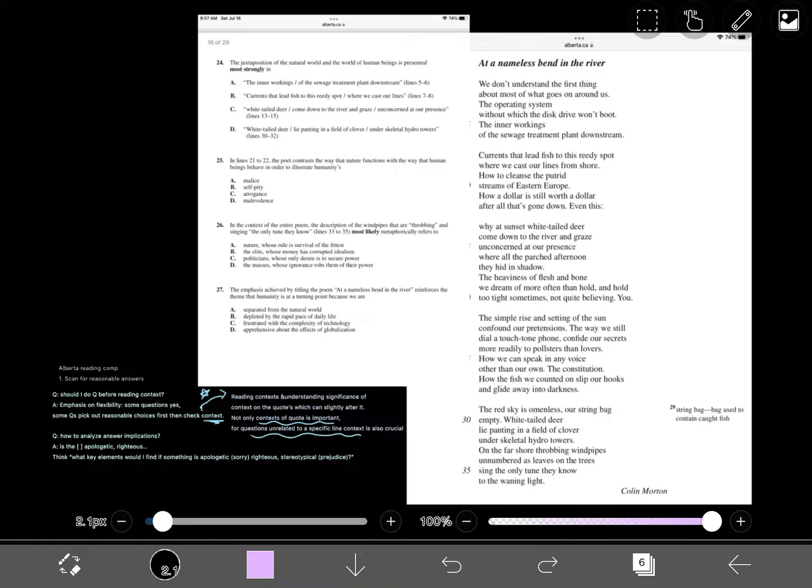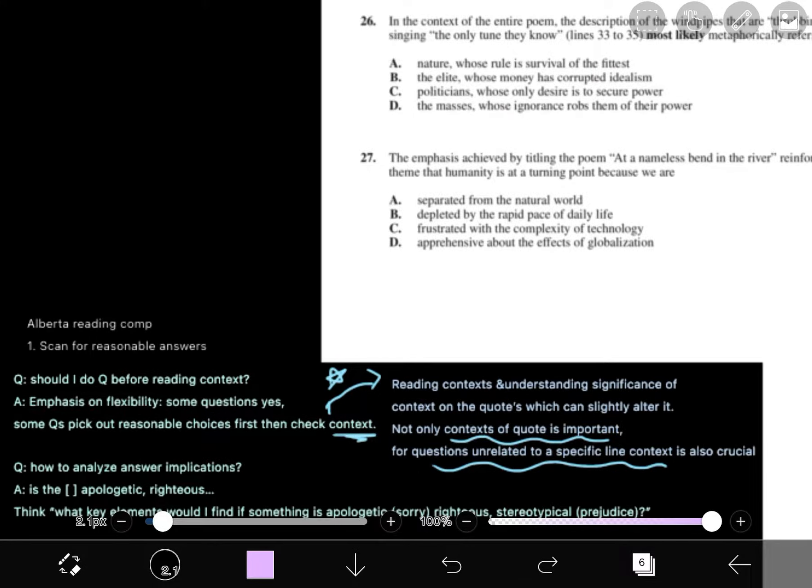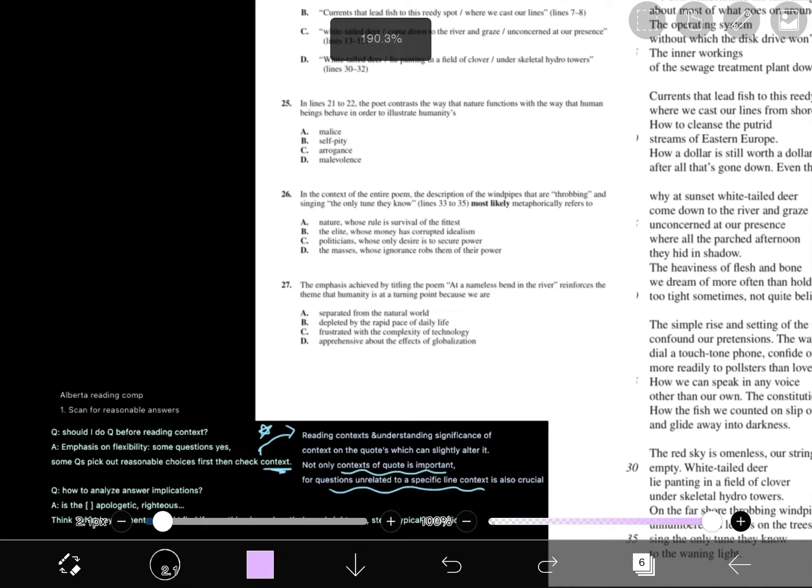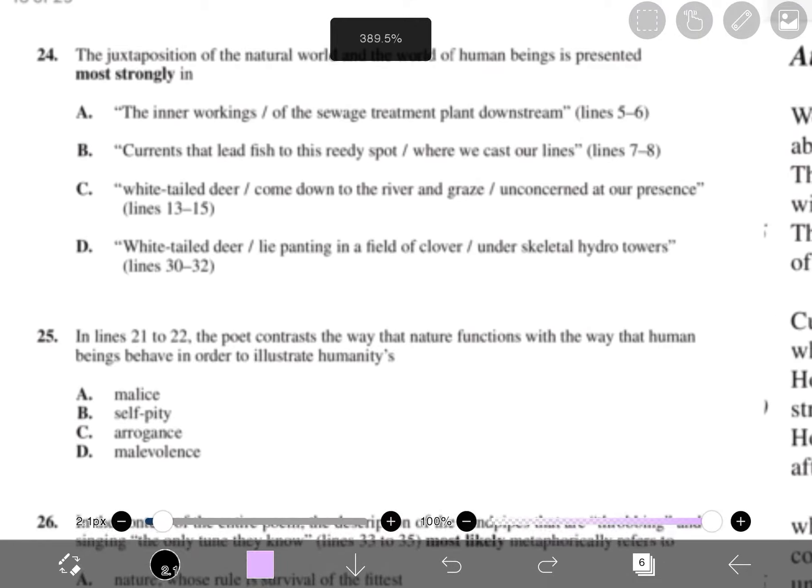Welcome back to another Alberta Reading Comp video. The first step I take when doing these is I scan for the reasonable answers and then I look for the context and see if it matches. I went through my process more in depth in my video of Alberta English Reading Comprehension Part B.1, so you should really check that out because otherwise you might be misled. But first I'm going to jump straight into the questions.